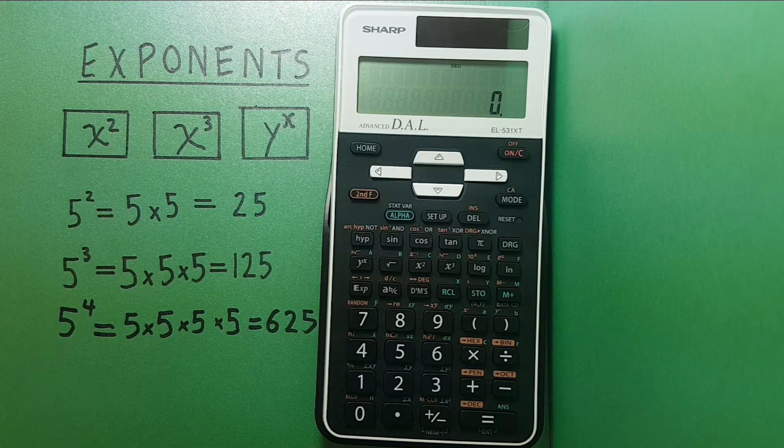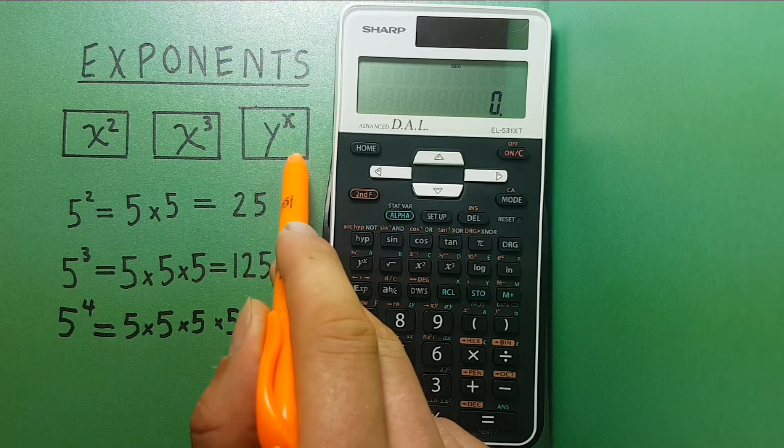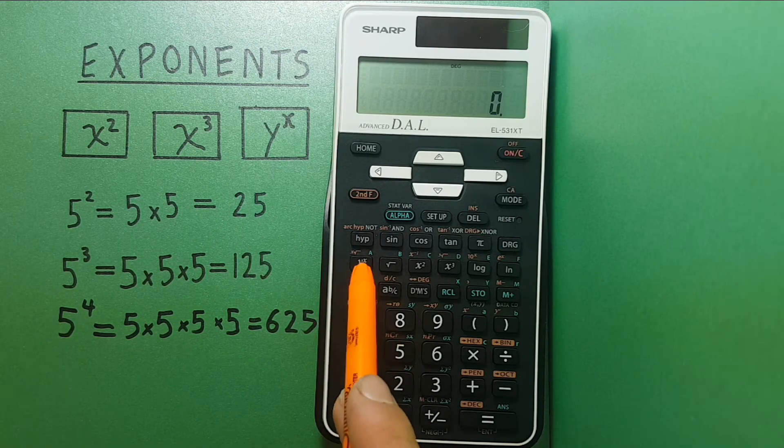What if we want to find an exponent that isn't 2 or 3? Then we use that Y to the X button which again is located here.